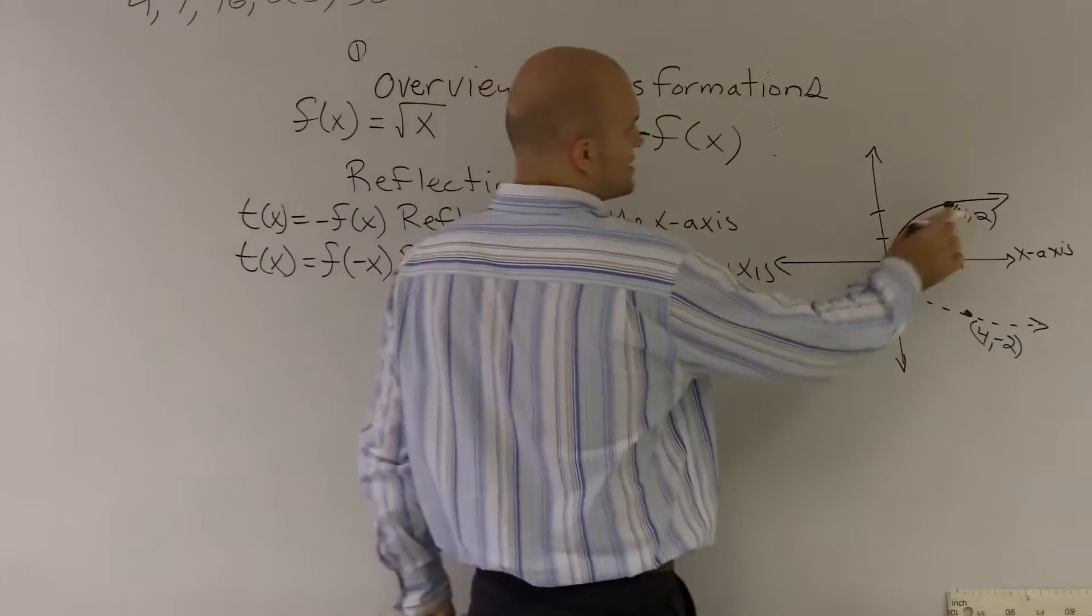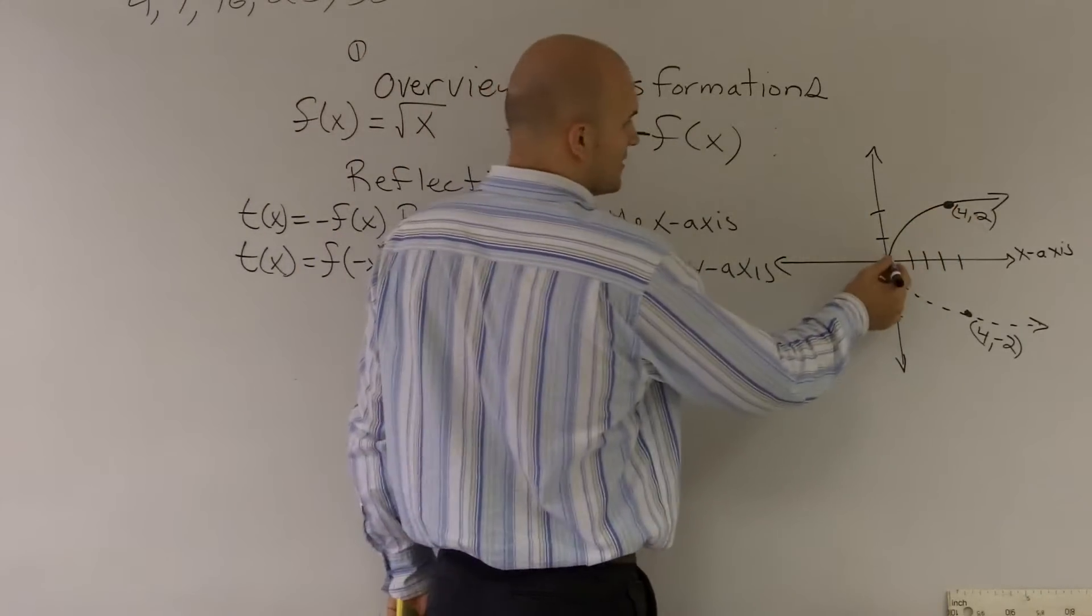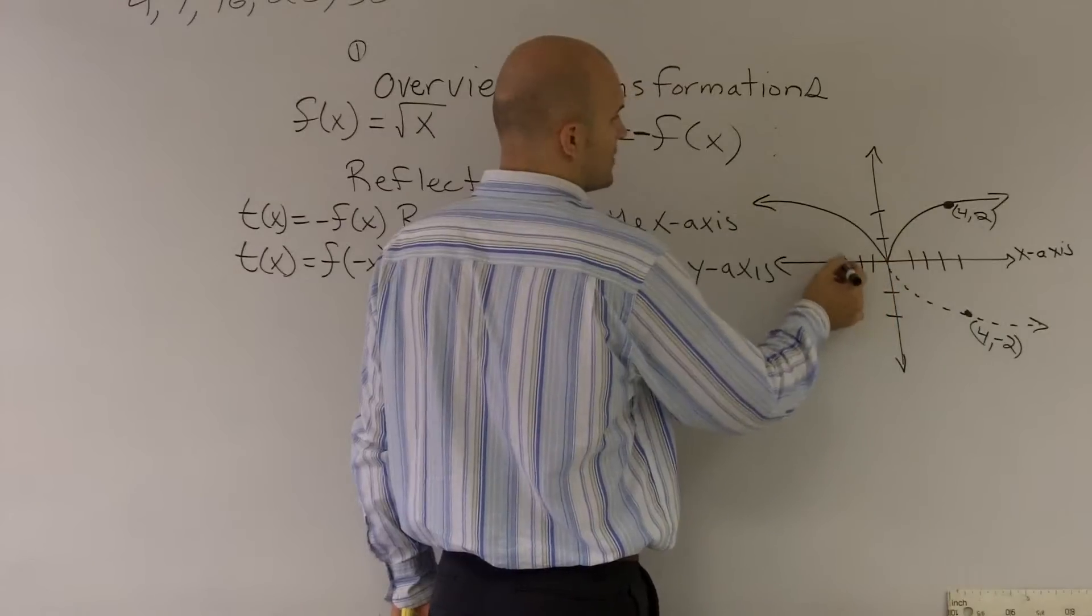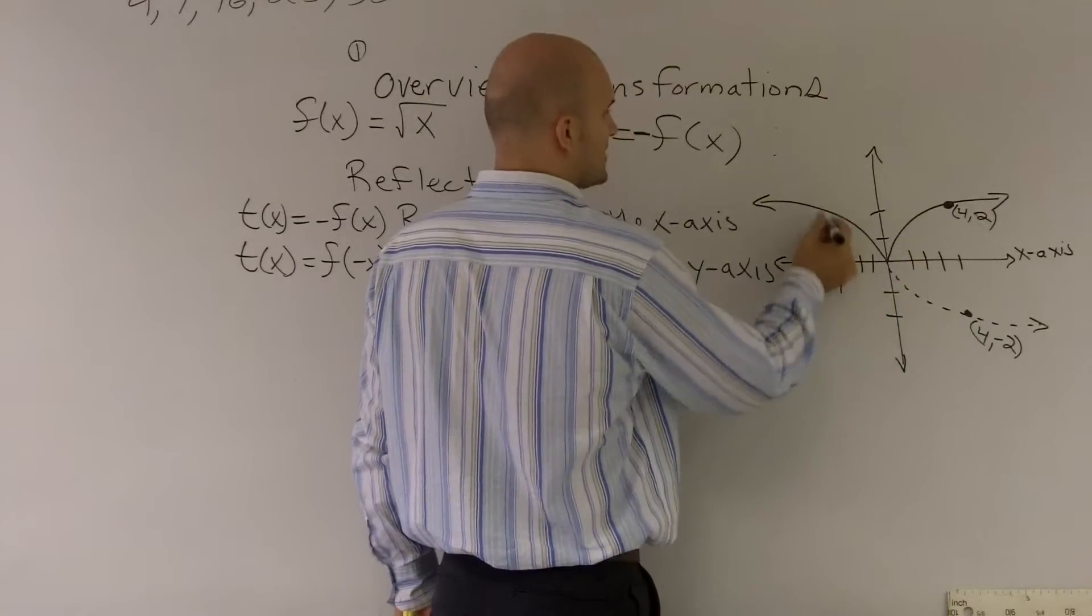So if you look at this, if I was going to change now my x value to be a negative, my graph is now going to look like this. So now I'm going to go over negative 4, but I still go up 2.